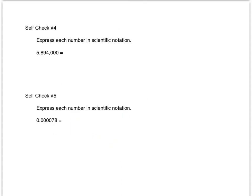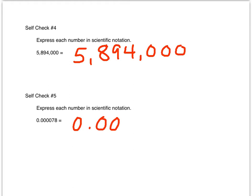Now it's time to do some problems on your own. In self-check number four, we're going to express each number in scientific notation. The number is 5,894,000. In the fifth self-check, the number is 0.000078. Take a few minutes to show your work on the back of your paper and change these numbers to scientific notation. Be sure to put your answer on your notes and to submit the answer to me online.